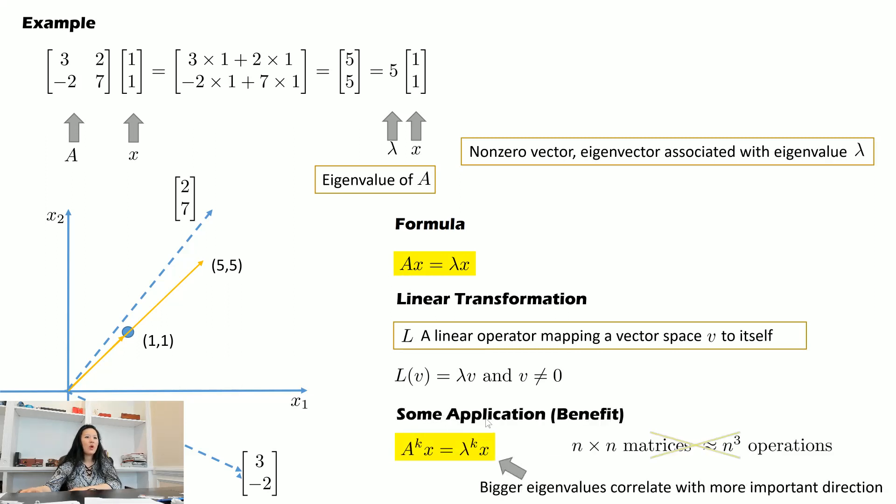Here are some applications. When you multiply an n by n matrix with itself, it will normally take you n to the power of 3 operations. But if we know the eigenvector, it's going to be a simple power of λ multiplied by the vector. So it's a lot more simplified.